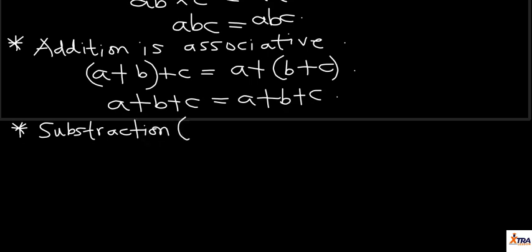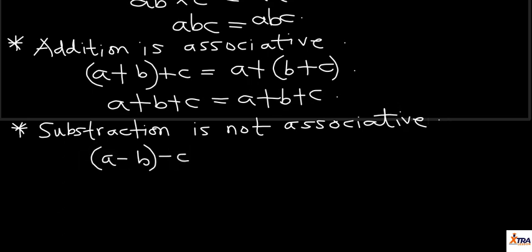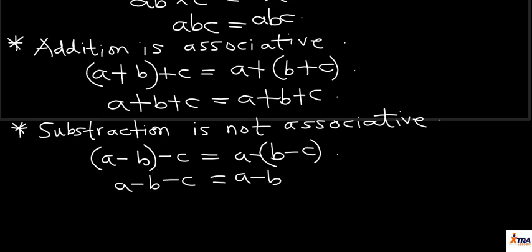For subtraction, however, subtraction is not associative. We can deduce this because (a − b) − c is not the same as a − (b − c). By expansion, (a − b) − c gives a − b − c, while a − (b − c) gives a − b + c. By comparison, these two are not the same, so subtraction as an operation is not associative under the set R of real numbers.